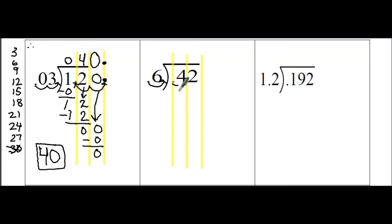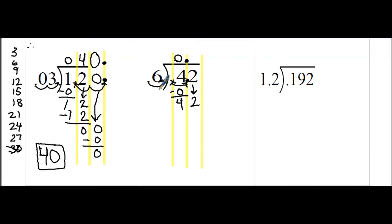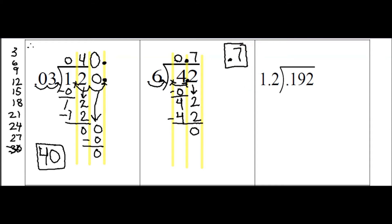We have our columns set up. We're going to move the decimal over once to make it 6, and move this once to make it 4.2. We raise the decimal up. 6 goes into 4 zero times, and 0 times 6 is 0, so we have 4 minus 0 is 4. We combine the next column by bringing that 2 down. 6 goes into 42 seven times — 7 times 6 is 42 with 0 left over. So 0.7, or 7 tenths, is your final answer.